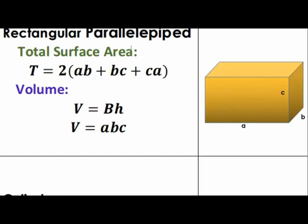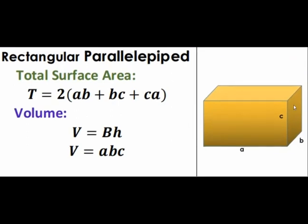Therefore, the total surface area is equal to the sum of twice AB added to twice BC added to twice CA, which is equivalent to this formula. By factoring out two, we have the total surface area equal to 2 times the quantity AB plus BC plus CA. Similar to a cube, the volume of a rectangular prism is equal to the area of the base times height. Here, the area of the base is AB and the height is C, therefore the volume is equal to ABC.